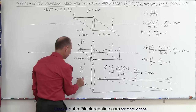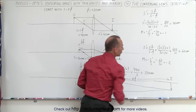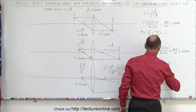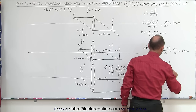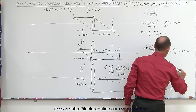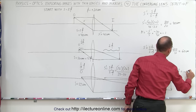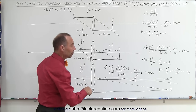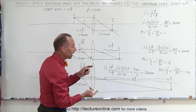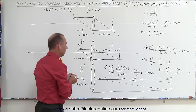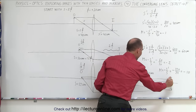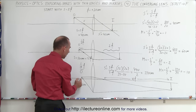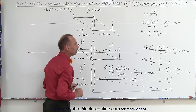The object is one-tenth the focal length from the focal point, and the distance between the focal point and the image is 10 times the focal length. The magnification equals −S' / S = −220 / 22 = −10. Negative means inverted, and 10 means the image is 10 times the size of the object.